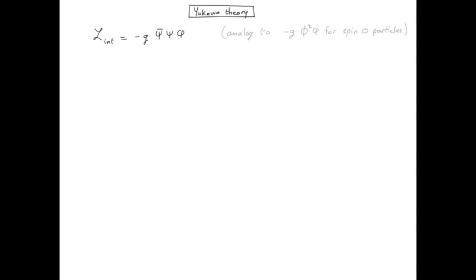The reason why we have psi bar psi and not just psi squared is because psi bar psi is a scalar and therefore is the right way to build a Lagrangian which has to be a scalar quantity at the end.